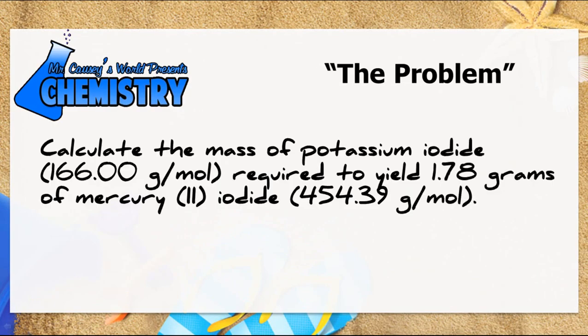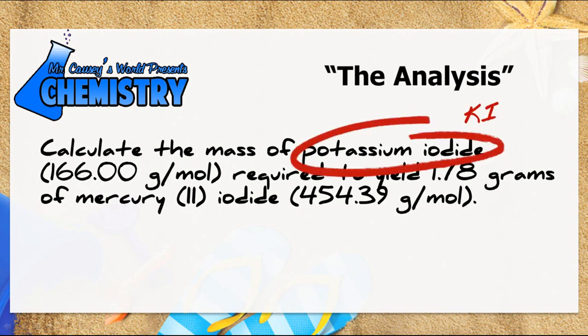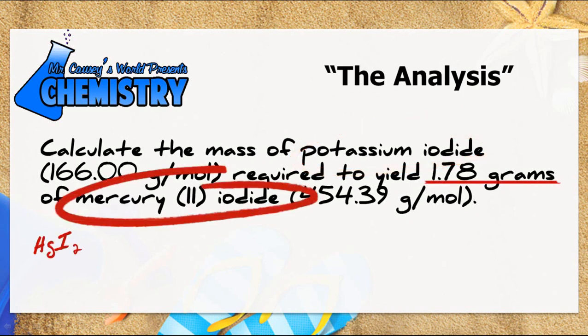The problem: calculate the mass of potassium iodide required to yield 1.78 grams of mercury-2 iodide. The analysis is that I want to find out how much potassium iodide, or KI, it's going to take to produce 1.78 grams of mercury-2 iodide, which is HgI₂.